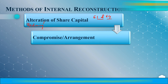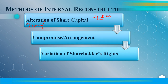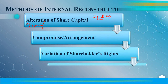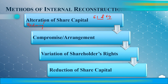The second method is compromise or arrangement. This relates to liabilities — we ask shareholders or debenture holders to reduce their rights. For example, if we owe debenture holders Rs. 2 lakhs, we tell them we will pay Rs. 1,80,000 and ask for a Rs. 20,000 discount. They agree because they receive immediate payment. This is variation of shareholders' rights. For example, 11% preference shares can be converted to 9% or 10% preference shares.